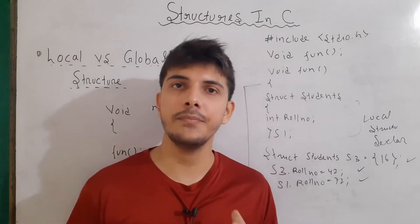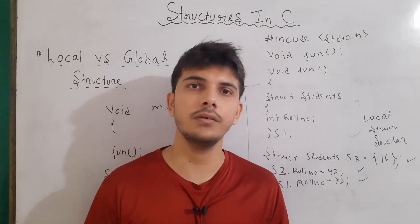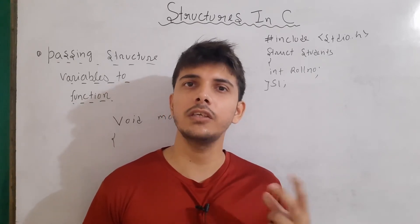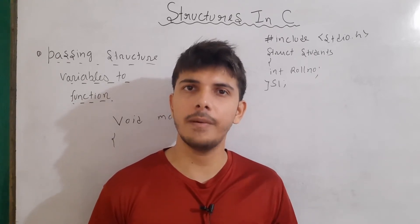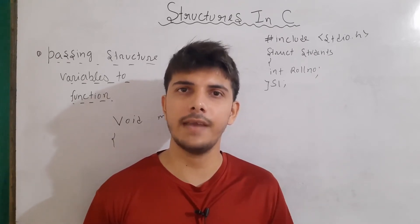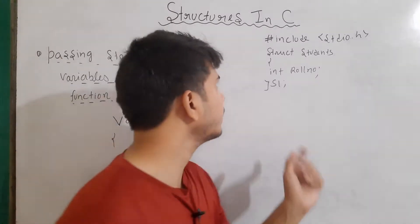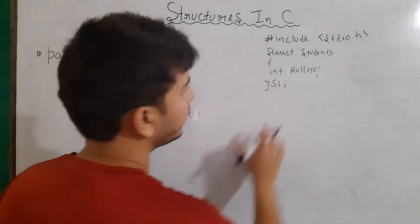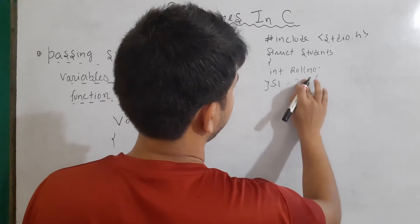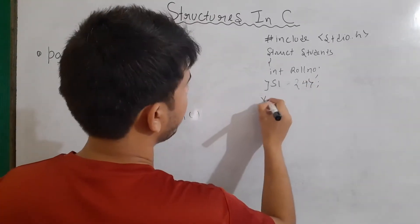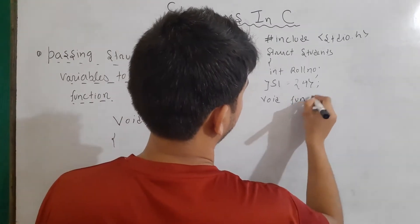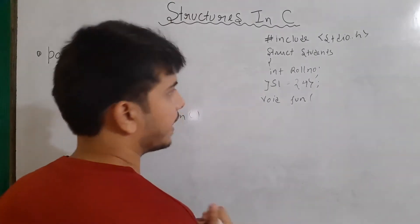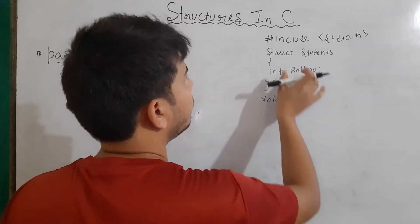Now let's talk about how we can pass the structure from one function to another. We already know from previous videos that we can pass a variable or value with two methods: call by value and call by reference. Let's first talk about the call by value method. Here I have defined a structure with the name students and I have made a variable s1. Let's initialize it also with some value.